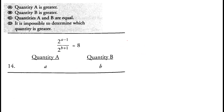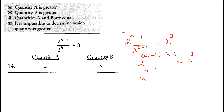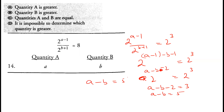Question 14: 2 raised to (a minus 1) divided by 2 raised to (b plus 1) equals 2 raised to 3. Using exponent rules: 2 raised to (a minus 1 minus b minus 1) equals 2 raised to 3, so a minus b minus 2 equals 3, giving a minus b equals 5. Since a minus b is positive, a must be greater than b. Option A is correct.